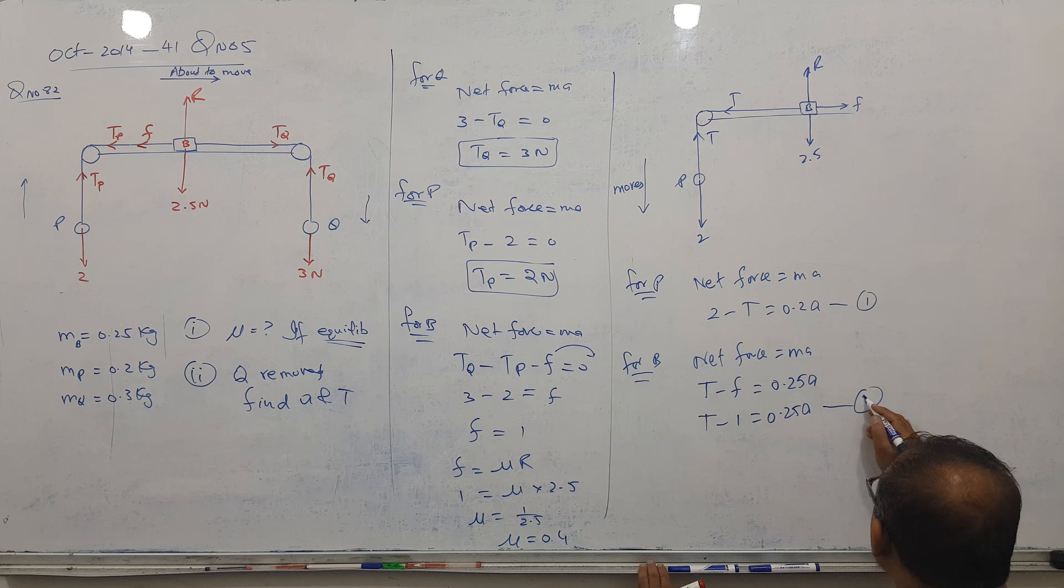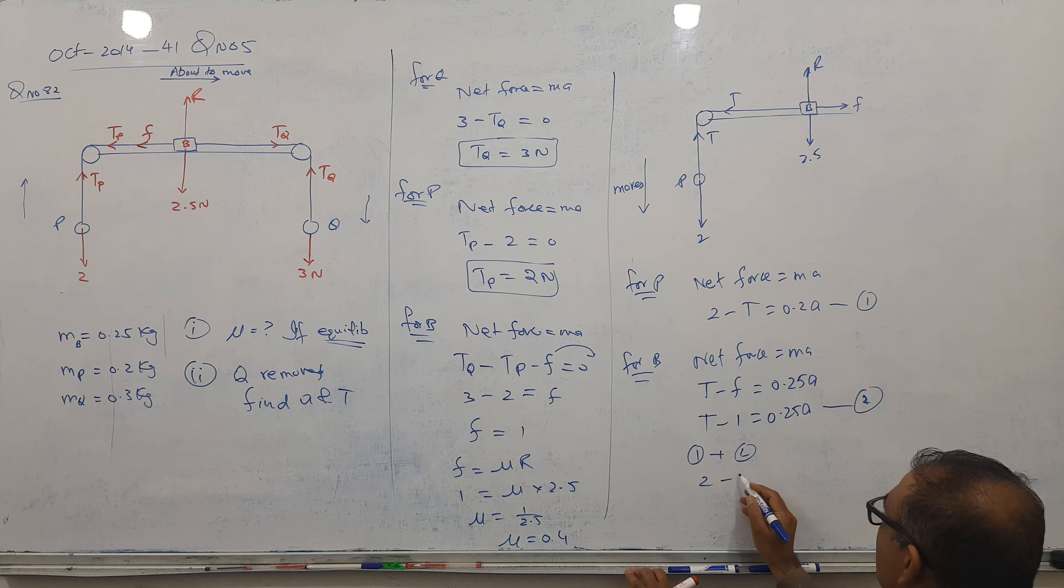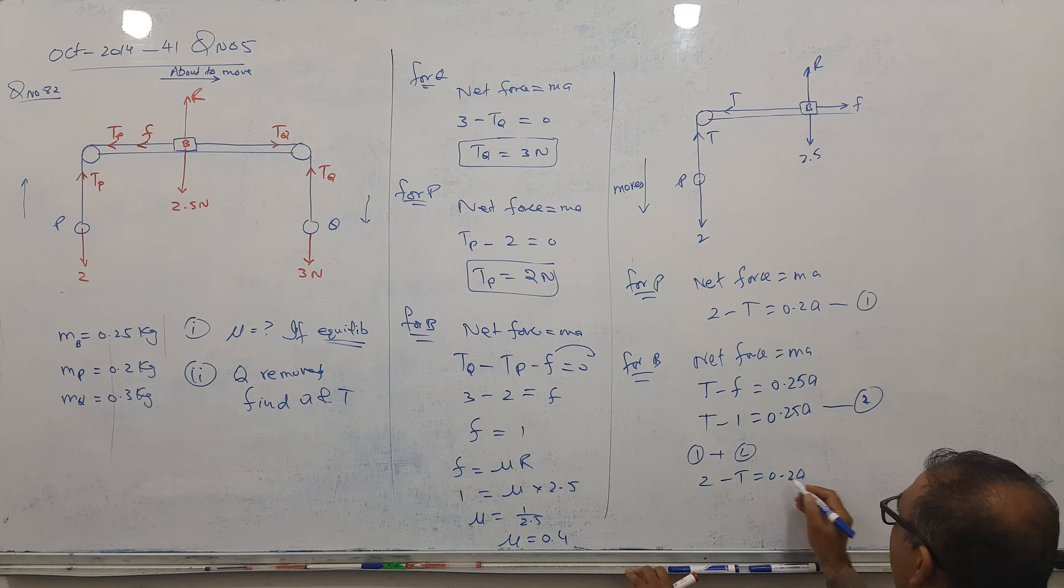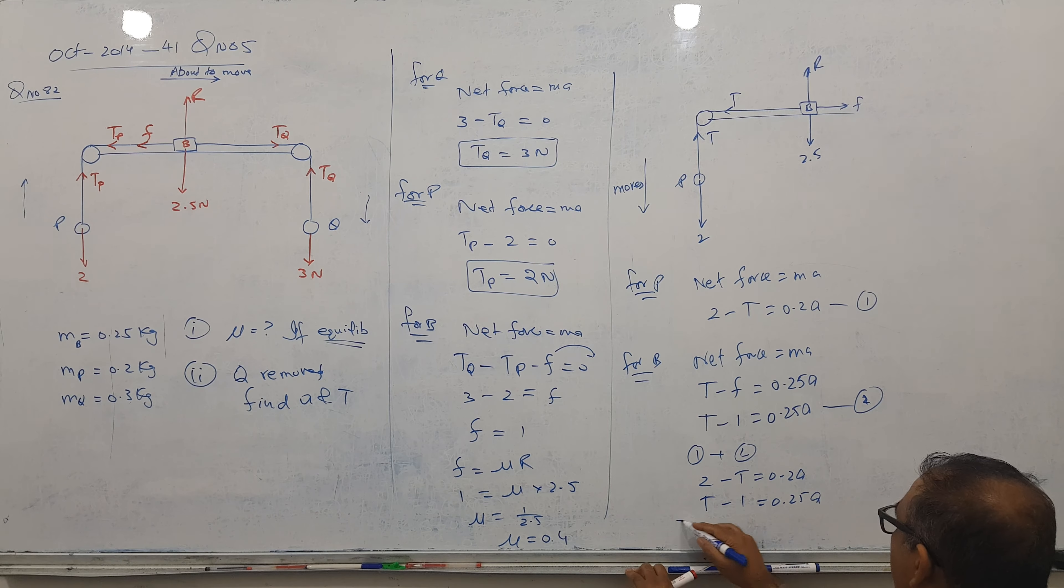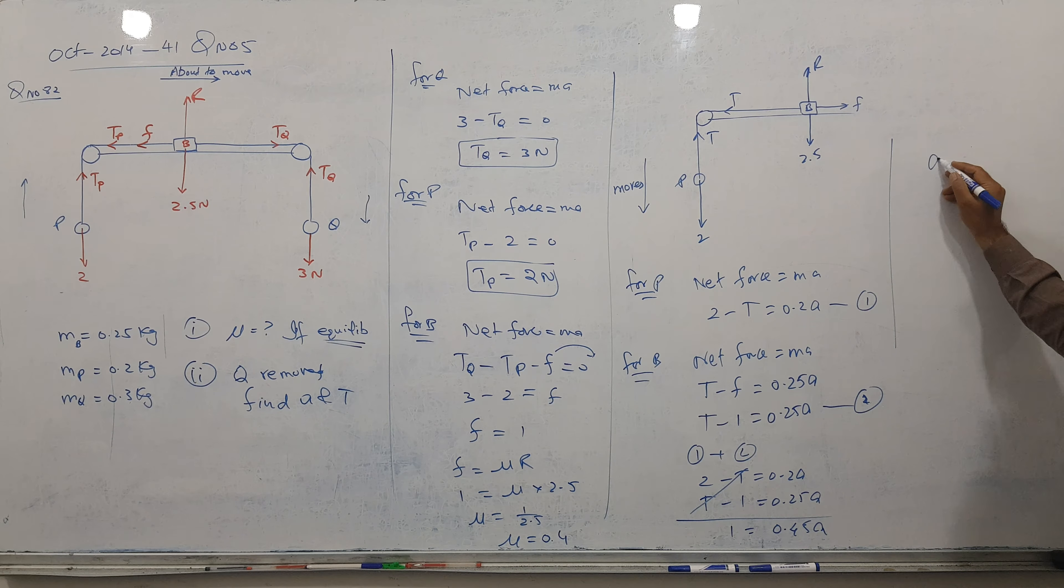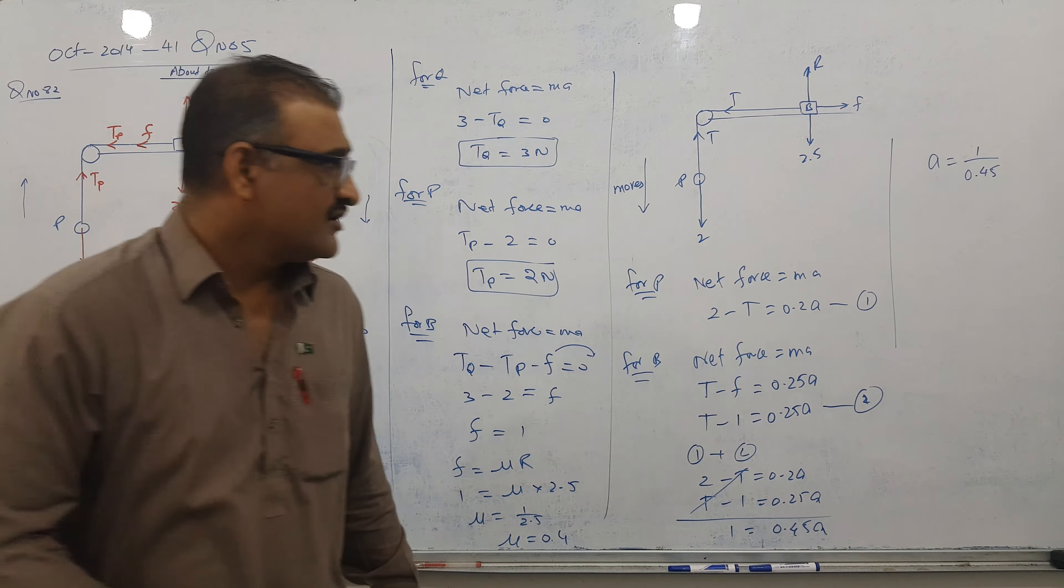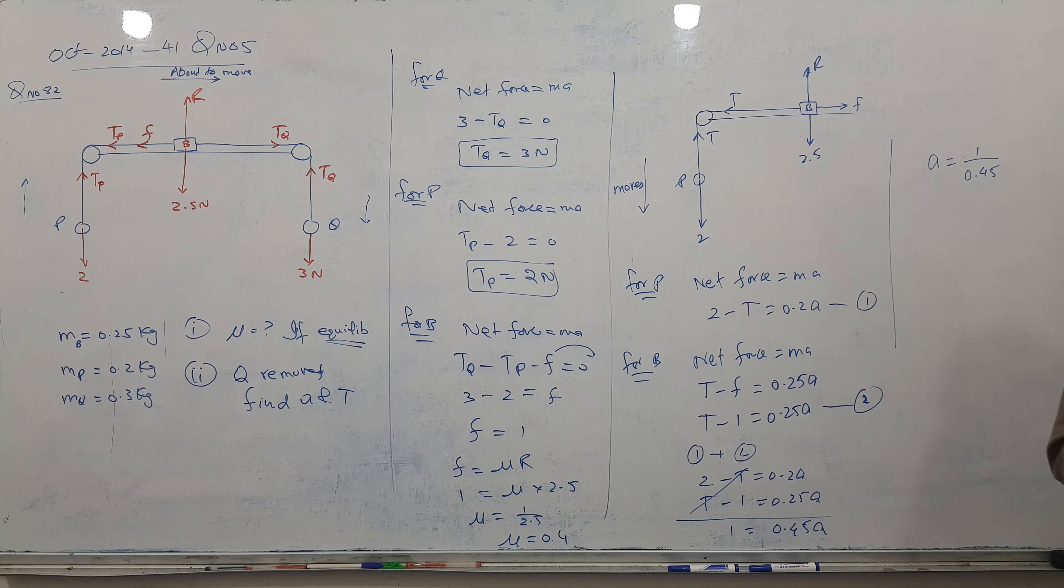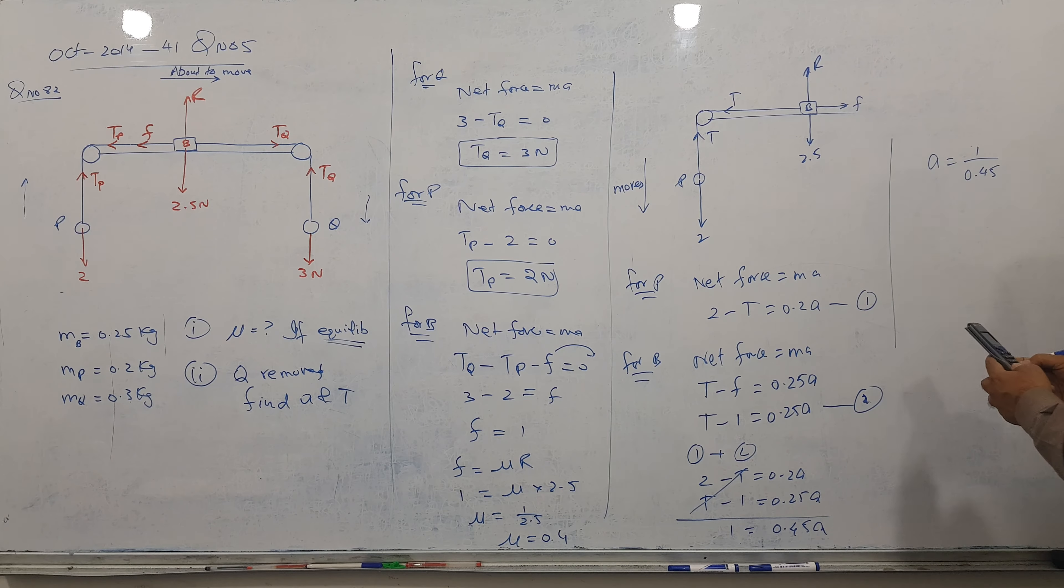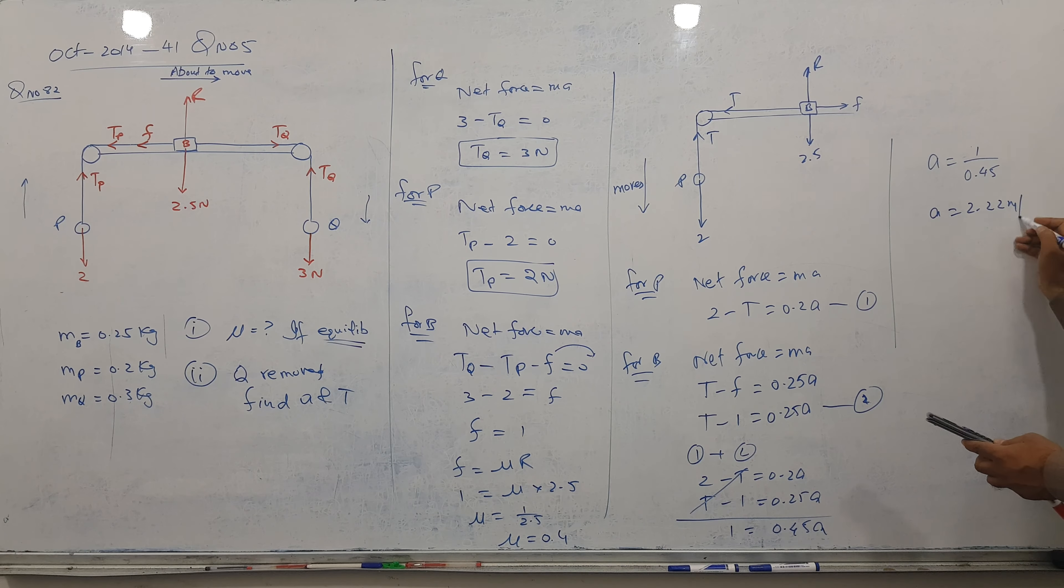So tension minus 1 equal to MA, equation number 2. So I'll solve them simultaneously, simple, 1 and 2 add. So 2 minus tension equal to A, and tension minus 1 equal to 0.25A. So tension cancel, here I got 1, here I got 0.45A. So A is coming, 1 over 0.45, and 0.45 you can find easily, so 1 divided by 0.45, it is coming 20 by 9 or 2.22 meter per second square.